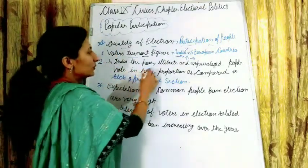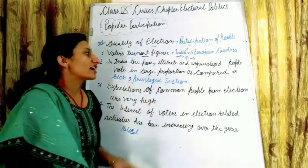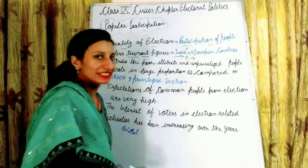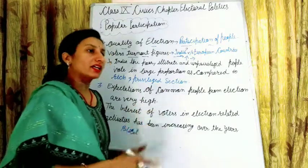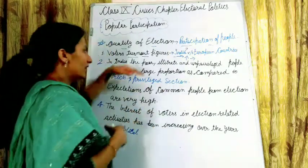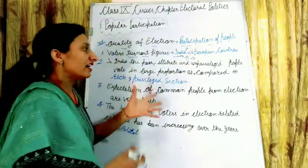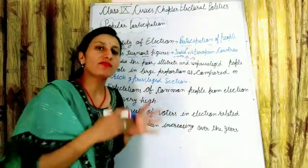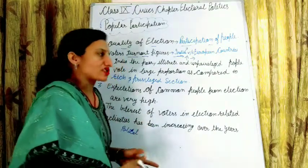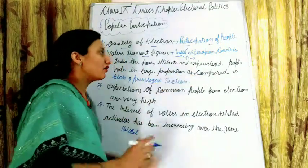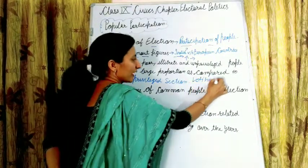In India, the poor, illiterate, and unprivileged people vote in large proportion as compared to the rich and privileged section. These people participate maximally in elections; their voting criteria remains at an upper level.